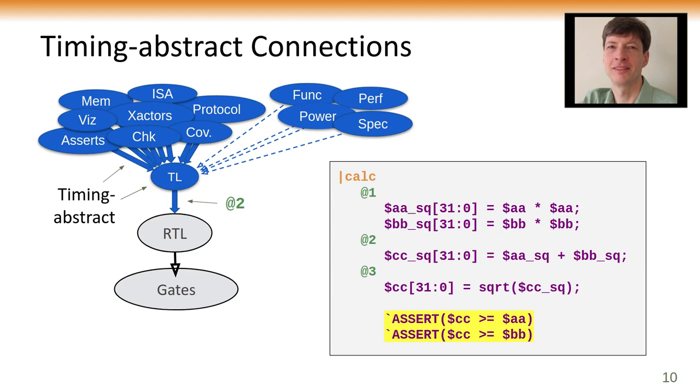So the transaction level model itself is timing abstract, and that means that all the verification models now are connecting to this timing abstract model. To illustrate that, I'm adding some assertions to this calc pipeline. The resulting calculation of C should always be greater than or equal to the distance of the legs A and B, and I'm assuming that the distances are positive. You'll notice here that these assert statements don't have any time reference. The signals AA and BB are produced in stage one of the pipeline, or at least available in stage one of the pipeline. We're assuming they're inputs. And this assertion is in stage three. The context of the pipeline provides the necessary information for the checkers to know that they have to essentially flop A and B forward in order to do the assertion.